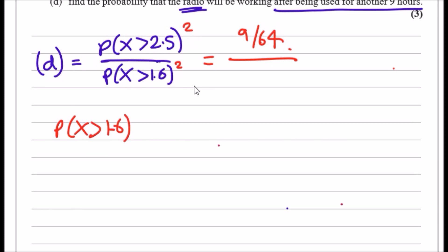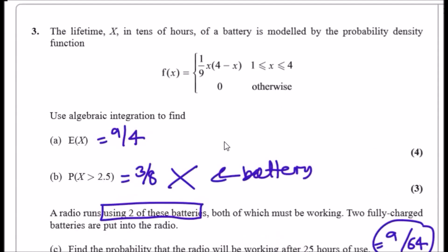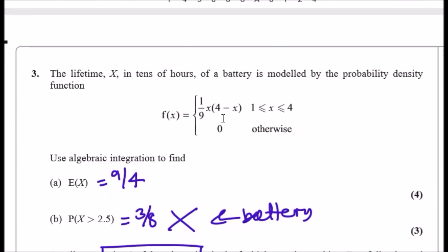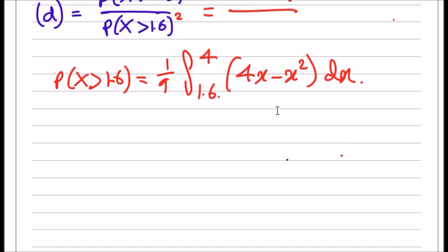This is just standard procedure. Take the density function and integrate from 1.6 to 4. So 1/9 outside, integrate from 1.6 to 4: you get 4x minus x², then dx. To get the standard format, 4x is 4x²/2 or 2x², and this is x³/3, evaluated from 1.6 to 4. Plug in 4, find a result, plug in 1.6, evaluate, find the difference, multiply by 1/9. You should get 96/125.